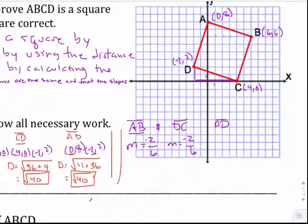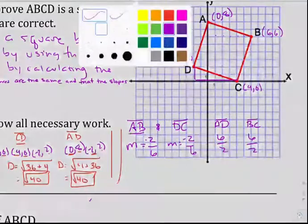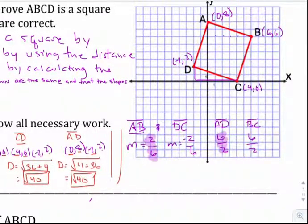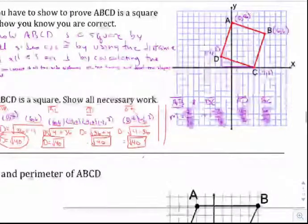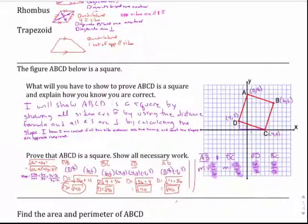Now let's check AD and BC. From D to A, we go over 2 and up 6, so the slope of AD is 6 over 2. From C to B, we also go up 6 over 2, so BC is 6 over 2 as well. This checks out immediately because negative 2 over 6 and 6 over 2 are opposite reciprocals — we flipped and negated. So all side distances are equal and all slopes are opposite reciprocals, which proves that ABCD is a square. It's a lot of work, but there's no way around it — you've got to show all the pieces.